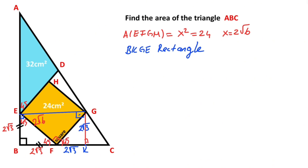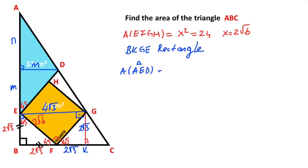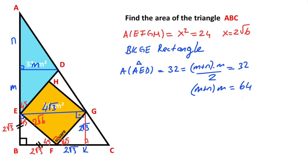So if it is 4 root 3, that means this length is also 4 root 3. And if you draw one more perpendicular line like this, notice that this triangle is an isosceles right triangle. So if it is M, that means this length is also M units. I want to represent this length with N. Therefore, since the area of the blue shaded triangle is 32 cm squared, M plus N times M over 2 must equal 32, so M plus N times M must equal 64.